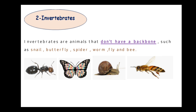Number 2 — invertebrates. What is the meaning of invertebrates, Junior 2? Invertebrates are animals that don't have a backbone. Like snail, butterfly, spider, worm, fly, and bee.